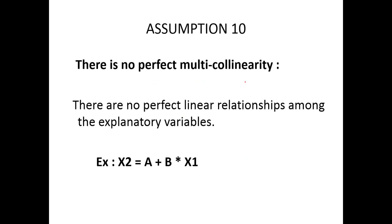There is no perfect multicollinearity. That means one of the independent variables cannot be a linear combination of other independent variables. For instance, if x1 and x2 are independent variables, we cannot express x2 like this: x2 equal to a plus b x1, where a and b are some parameters. We cannot express x2 like this.